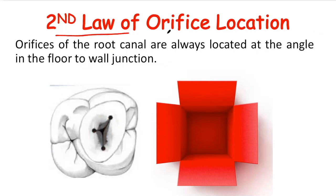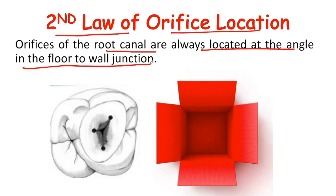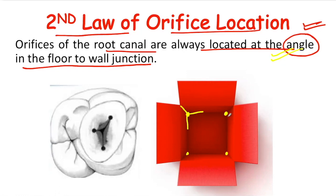The second law of orifice location says that the orifices of root canals are always located at the angle in the floor-to-wall junction. This means the orifices are located in the point angles — where two planes and the floor meet at a junction. So basically, the orifices are located in the point angles in the floor and wall junction.